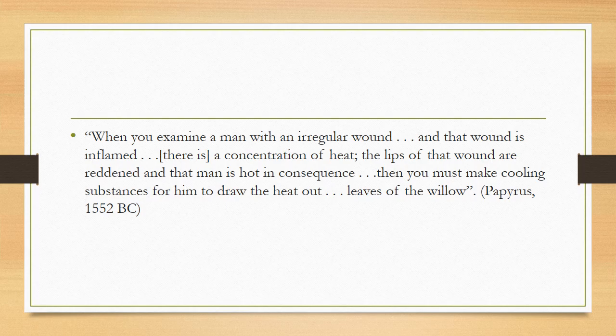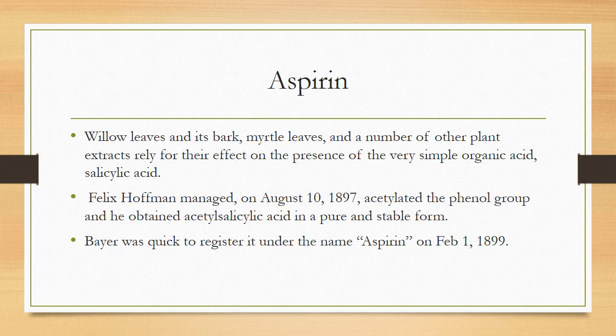An ancient text records: 'When you examine a man with an irregular wound that is inflamed, with concentration of heat, reddened leaves of the wound, and the man is hot, you must make cooling substances to draw the heat out — leaves of the willow is a treatment.' Aspirin is derived from willow leaves and bark. Felix Hoffmann, on August 10, 1897, acetylated the phenol group and obtained acetylsalicylic acid in a pure and stable form. Bayer quickly registered it under the name Aspirin on March 6, 1899.